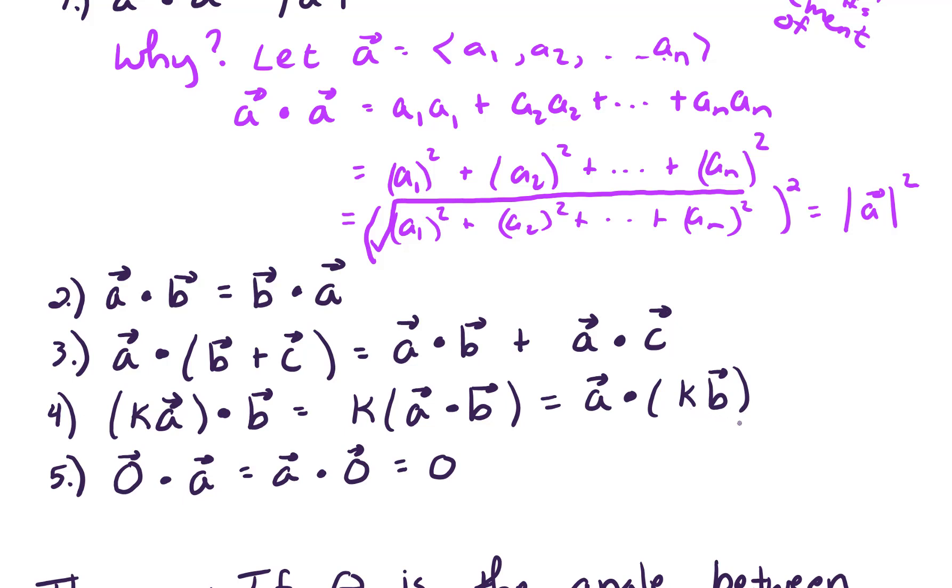Lastly, we've got a zero property. So the zero vector dot a equals a dot the zero vector, and the answer there is a zero without the arrow. Remember, this is a real number, whereas this zero over here is the zero vector. And for that reason, I have an arrow over that zero and no arrow over this zero, because it's a scalar.